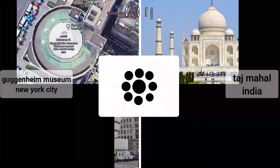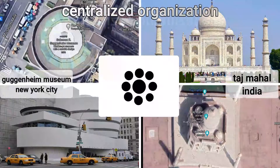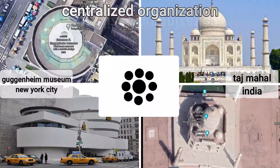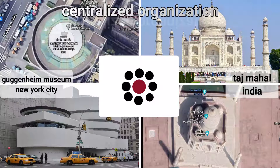A centralised organisation is composed of a dominant central space with a number of secondary spaces grouped around it. This organisation represents stability. The central space is usually irregular in form and larger than the secondary spaces. It may be either an interior or an exterior space.